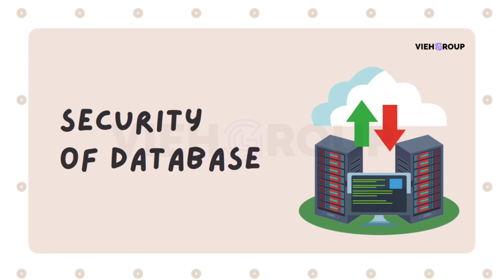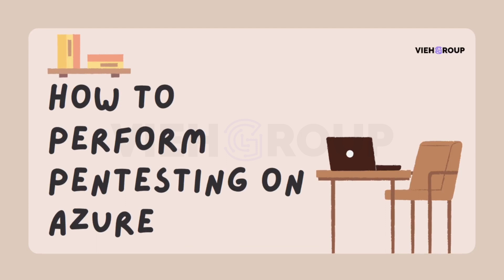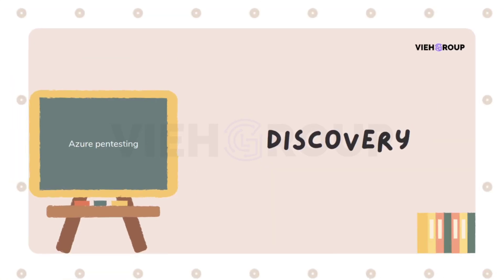Now that we know what to test, let's look at how to perform penetration testing on Azure. The first step is discovery — discover the Azure resources you want to test. Use a tool like Burp Suite to intercept the network and search for them automatically, or manually enter the addresses. This is the first work you do in the first stage.